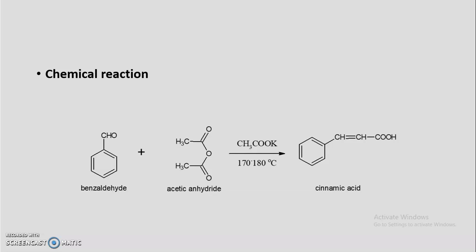Any aromatic aldehyde with the anhydride in presence of the potassium or sodium salt of the corresponding acid gives us an alpha-beta unsaturated acid. Here you can see this is the alpha carbon atom and this is the beta carbon atom, and these alpha and beta carbon atoms are unsaturated. That's why cinnamic acid is known as the alpha-beta unsaturated acid. In this reaction, benzaldehyde heated with acetic anhydride and potassium acetate gives us cinnamic acid.